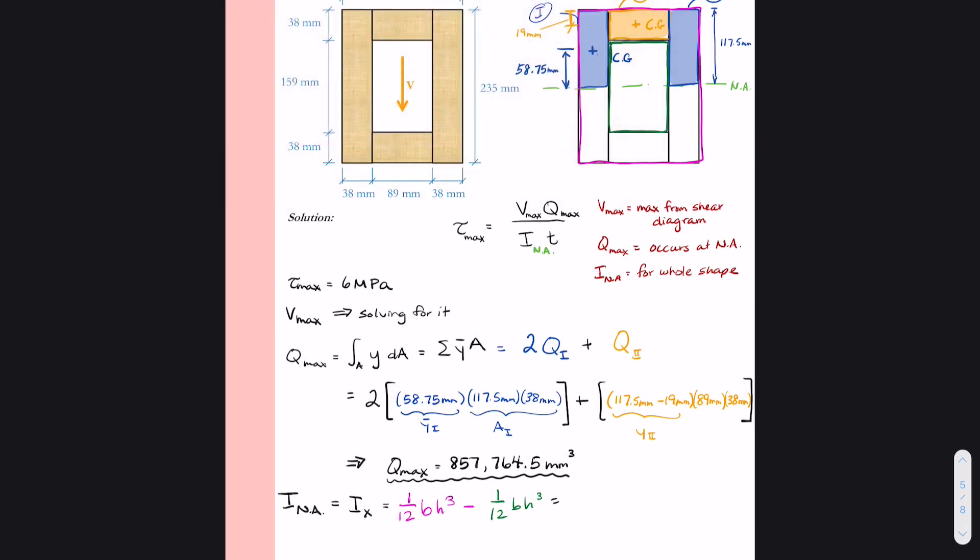And so now I plug in my numbers. So for the magenta rectangle, it's 1/12. The base is going to be the entire width of the beam, which is 165 millimeters times the height, which is 235 millimeters cubed.